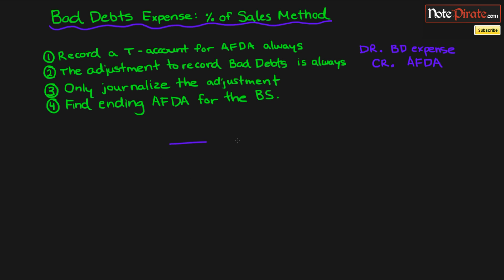Rule one: record a T-account for Allowance for Doubtful Accounts. Throw that T-account up and write Allowance for Doubtful Accounts at the top. You want to abbreviate it — you don't want to write that all out and waste time on a test or quiz.